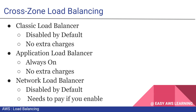For the Application Load Balancer, cross-zone load balancing is always on — you cannot disable it, and there are no extra charges. For the Network Load Balancer, it is disabled by default, but you can enable it in the configuration. However, you need to pay a charge for enabling cross-zone load balancing because data will be going across availability zones.